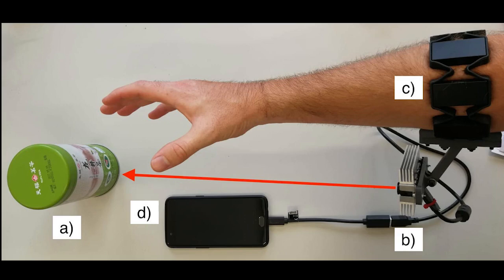Our system is shown here. The user will reach for the target object A with an RGBD video camera B observing the object and environment. The camera is attached to the user via an armband C and data is collected on the smartphone D. The data collected includes the grasp the user chose for this object.